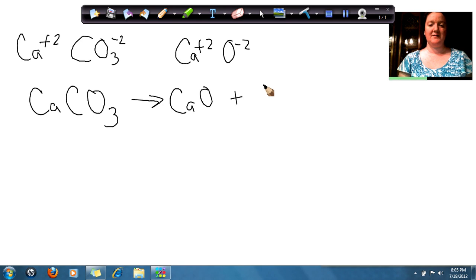And carbon dioxide. We know we have carbon. Di tells us that we have two, so it's O2. So we have calcium carbonate goes to calcium oxide and carbon dioxide.